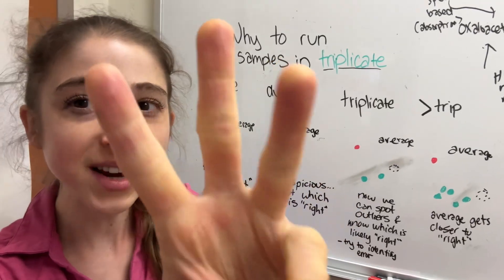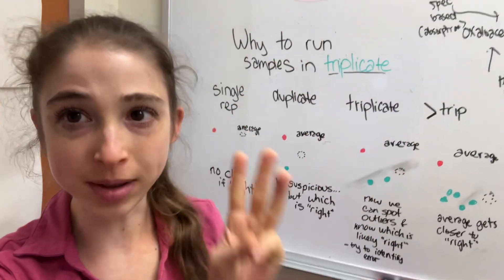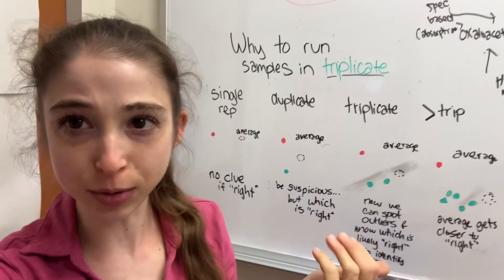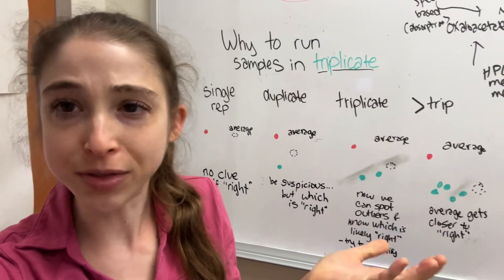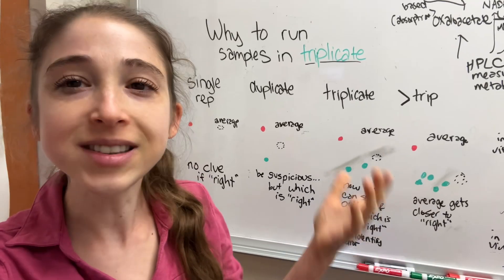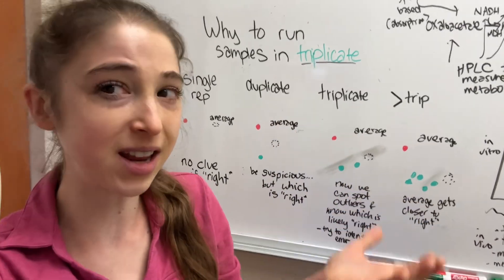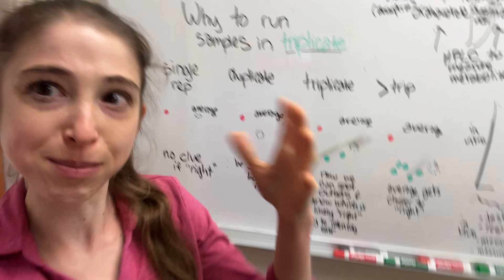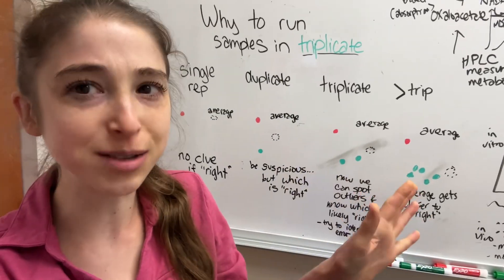When we're setting up an experiment, scientists often run things in triplicate, so we have three samples. And you might be asking why three? It's not because we're superstitious and like lucky number three. Instead, it's so that we can spot errors and tell which value might be correct. Let me explain.